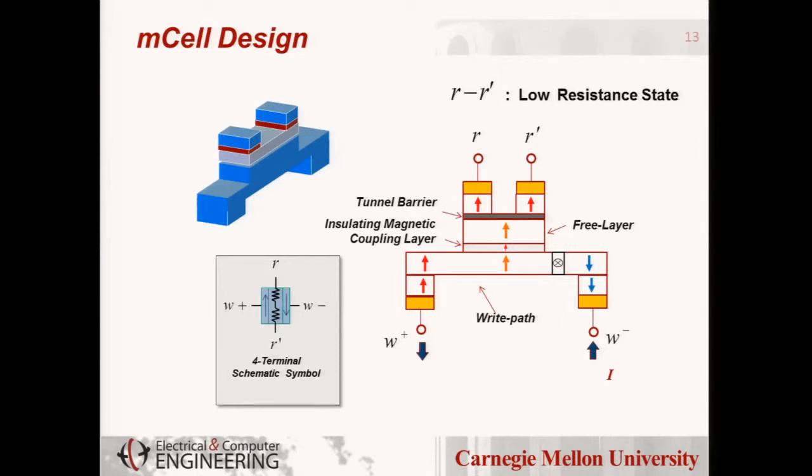There's another path called a write path, and that write path is just this spin hall metal strip. You can inject a current from one side and it goes to the other. One side is spin up and the other side is spin down. You have a domain wall trapped in the middle. The read path and the write path are coupled magnetically through an oxide layer, insulated electrically but magnetically coupled.